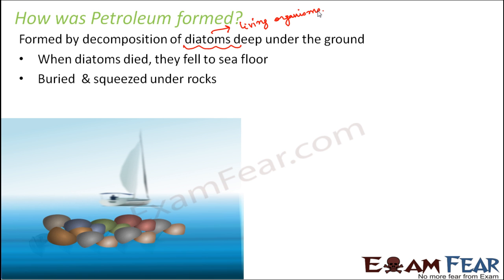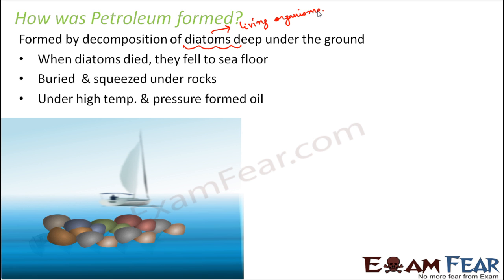In a very similar way, as pressure and temperature increased, these buried organisms went deeper and deeper. Under high temperature and high pressure, these dead organisms turned into petroleum. So petroleum is essentially oil — an oily liquid. It is often also termed as crude oil, which is the oil in its crude form, directly extracted from the earth.